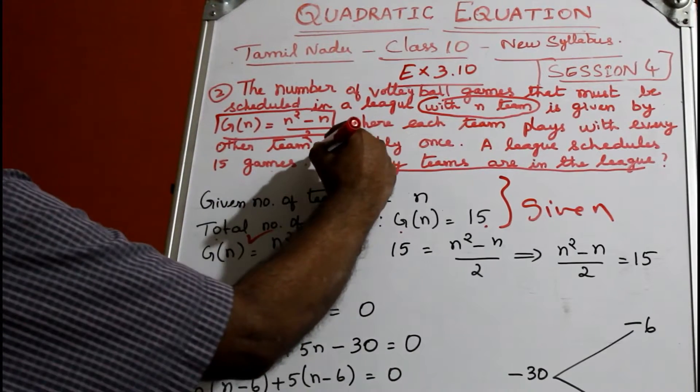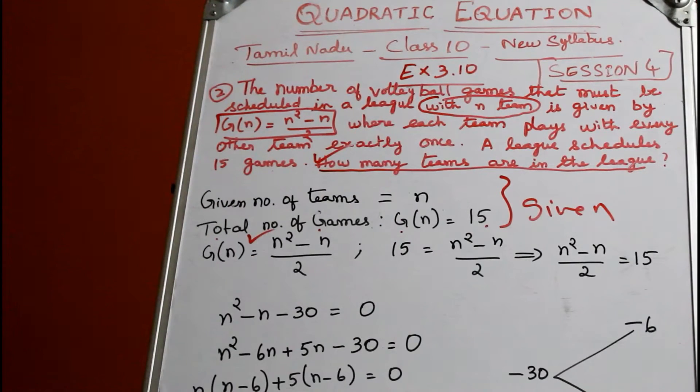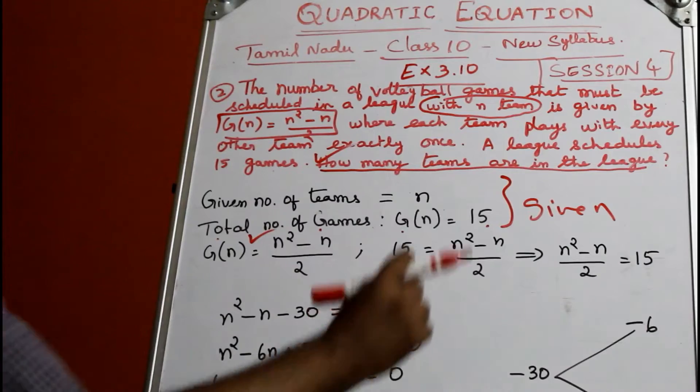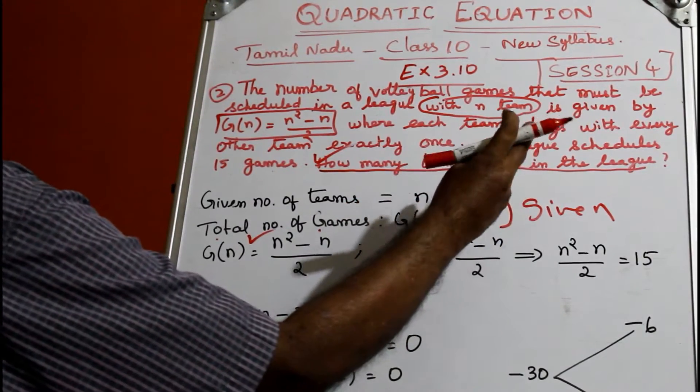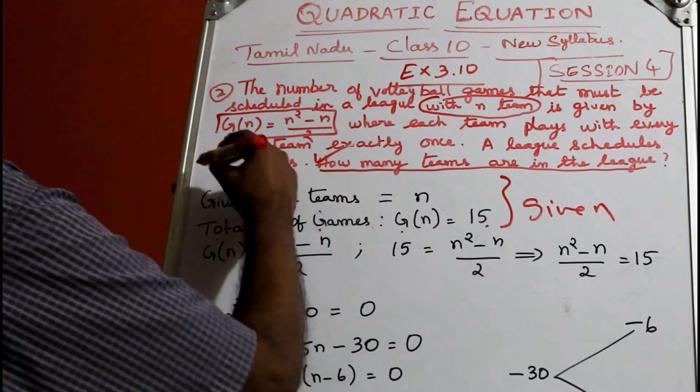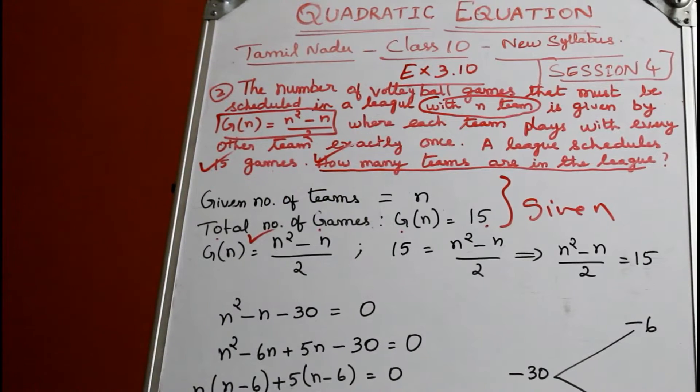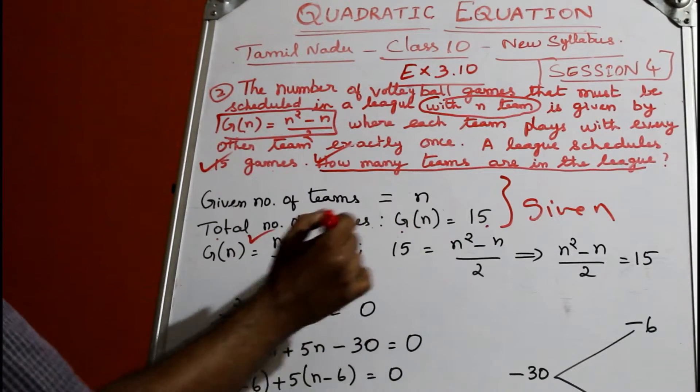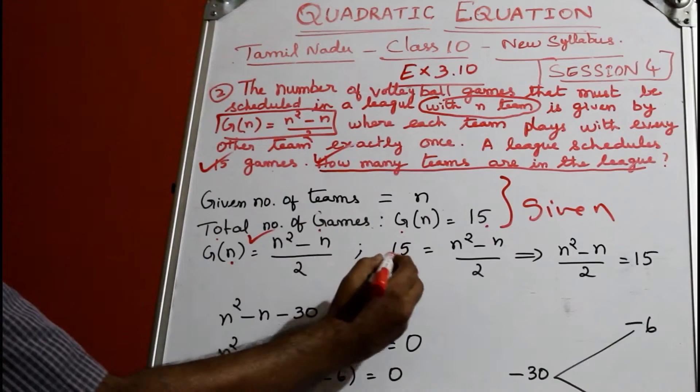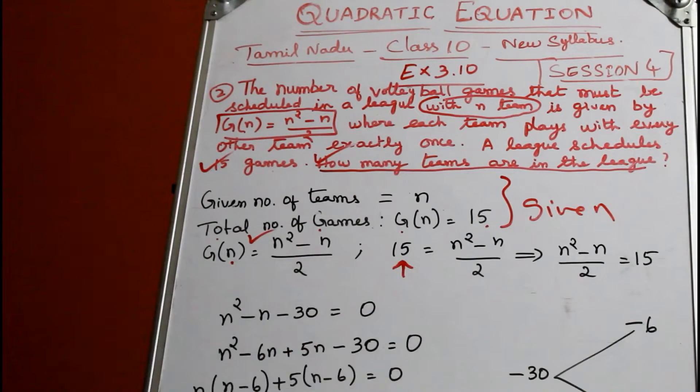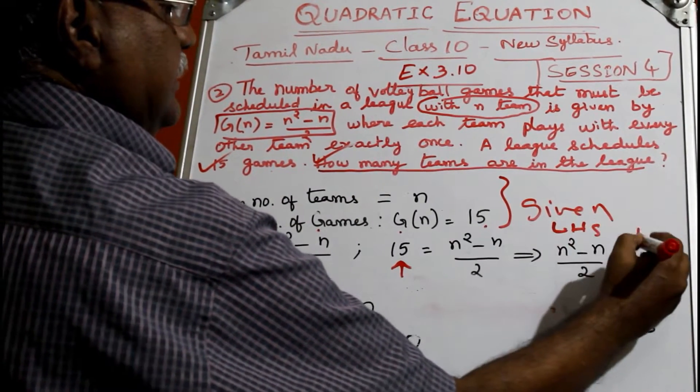Number of teams is n, number of games is totally 15 games, and G(n) = (n² - n)/2. You must put this as 15. I just kept it on the left-hand side; this is the right-hand side.